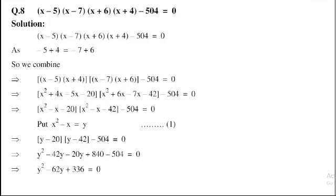The constant terms: minus 5 plus 4 is equal to minus 1, and minus 7 plus 6 is equal to minus 1. So combine the first and last terms — that is (x minus 5)(x plus 4) — and combine the second and third terms — that is (x minus 7)(x plus 6) — minus 504 is equal to 0. Expanding: x² plus 4x minus 5x minus 20, and x² plus 6x minus 7x minus 42.